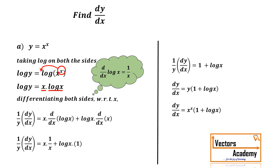So for these types of functions, we need to first take log on both sides and then differentiate. On the right hand side, we always need to apply the uv rule first, followed by the chain rule.